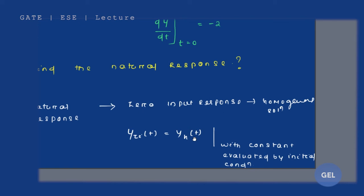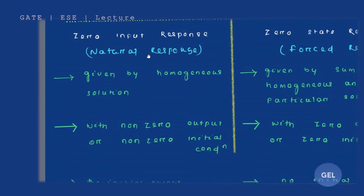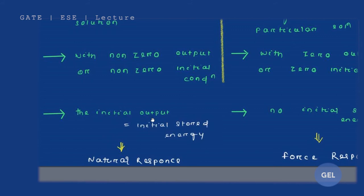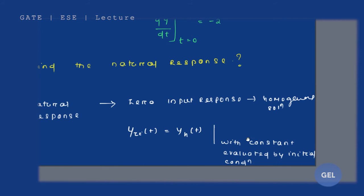All the constants you obtain from the homogeneous solution need to be evaluated using the initial conditions. This is because, by definition, the natural response has non-zero initial conditions — that is, initial energy — and by utilizing that initial energy, you find the homogeneous solution and evaluate all the constants to get the zero input response.